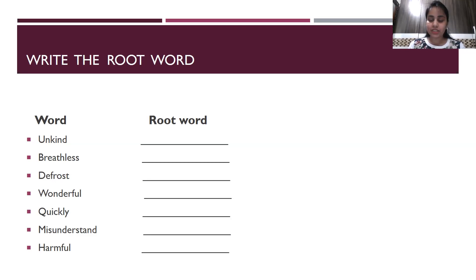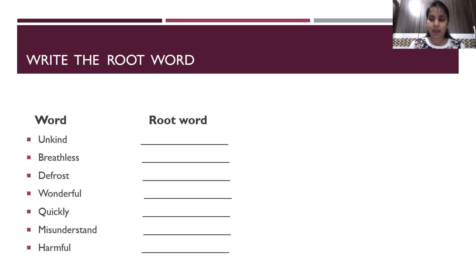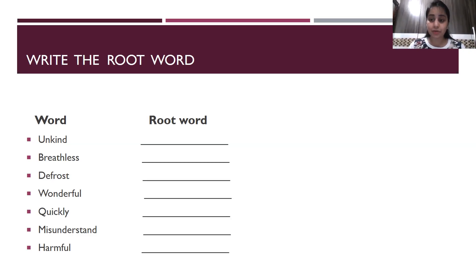The next word is 'deep roast' — 'deep' is the prefix and 'roast' is the root word. 'Wonderful' — 'wonder' is the root word and 'full' is the suffix. 'Quickly' — 'quick' is the root word and 'ly' is the suffix. 'Misunderstand' — 'mis' is the prefix and 'understand' is the root word. 'Harmful' — 'harm' is the root word and 'full' is the suffix. So you all now know how to separate prefix and suffix and identify the root word.